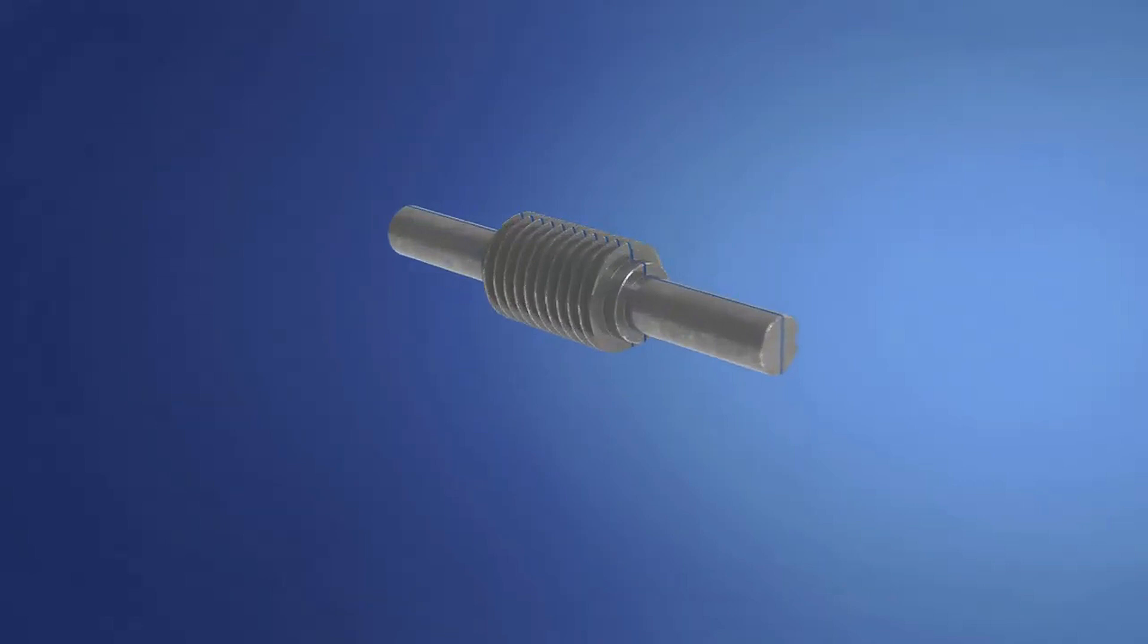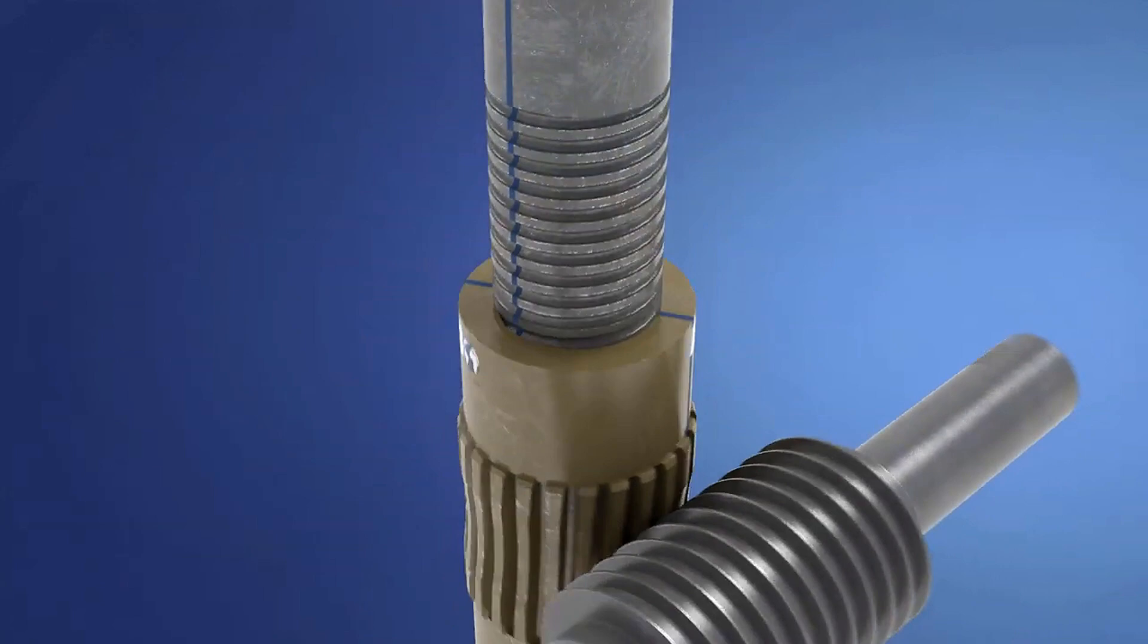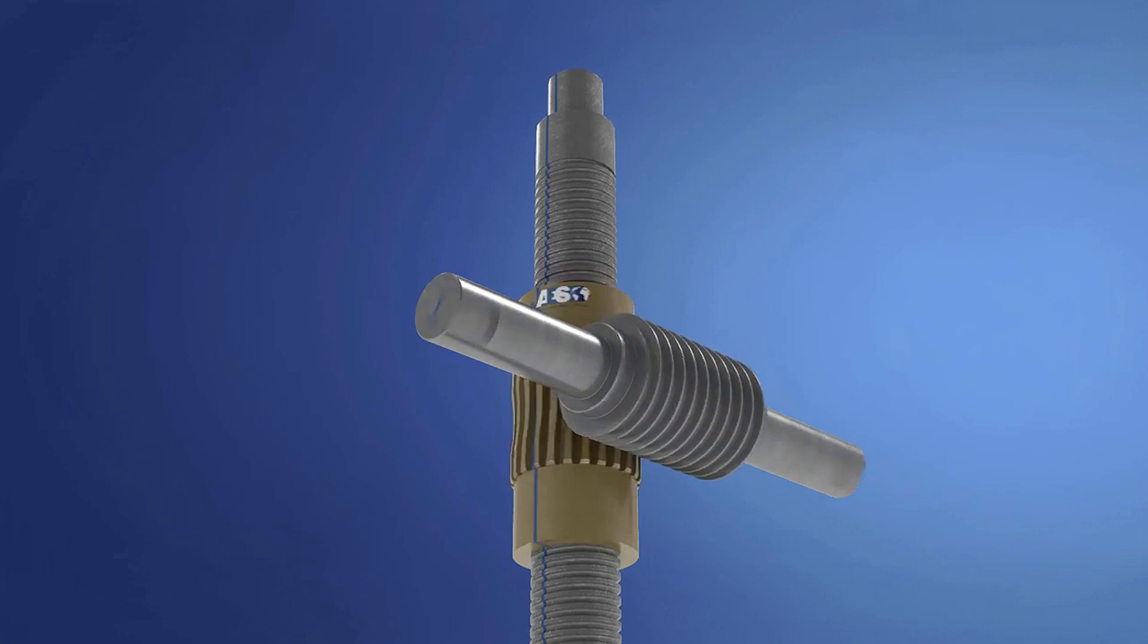A screw jack, also known as a worm screw jack, is a device used to convert rotational motion into push-pull linear motion. It utilizes the property of a screw thread, providing a mechanical advantage, which means that it can be used to amplify force.